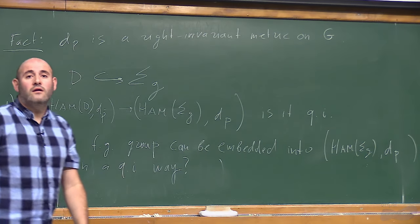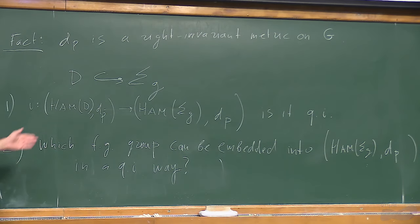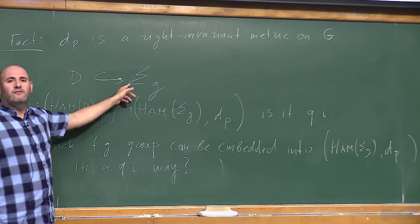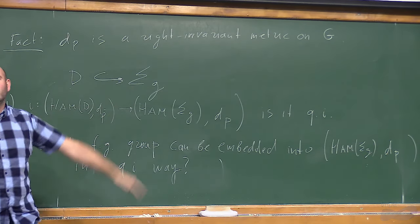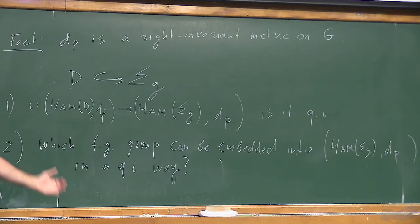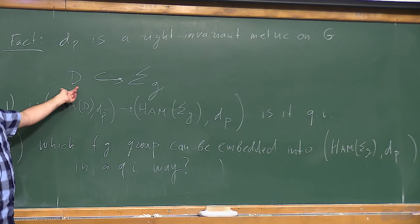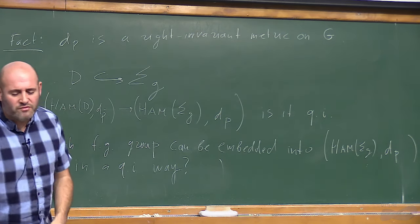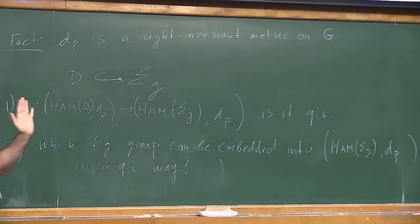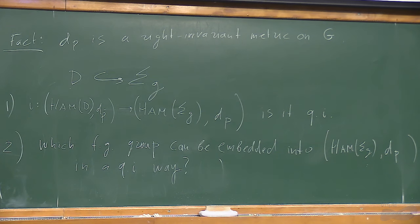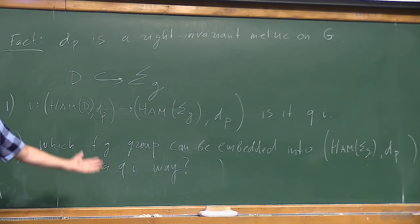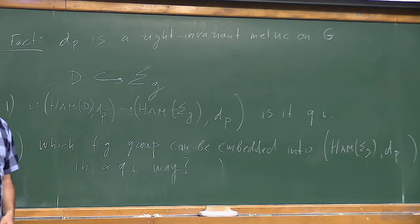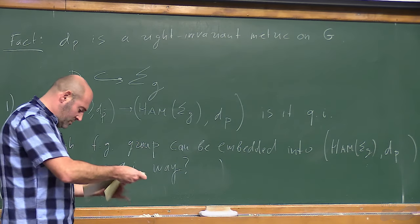How does the embedding map work? You embed the disk inside, and the diffeomorphisms are compactly supported — identity near the boundary. If the manifold has boundary, it is always identity near the boundary; if open, then compactly supported.